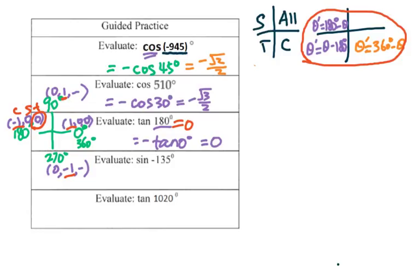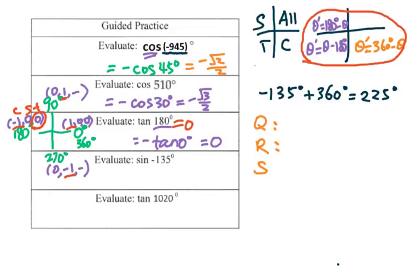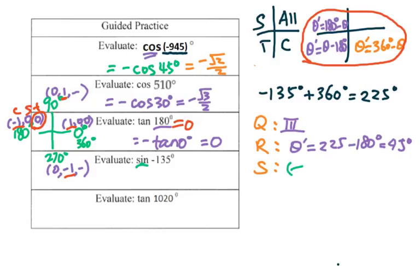For the next question: sine of negative 135 degrees. For negative 135, we add 360 degrees, giving 225 degrees. Then we go to QRS. The quadrant is third quadrant. Reference angle: 225 minus 180 equals 45 degrees. Using "All Students Take Calculus," sine in the third quadrant is negative. So we get negative sine 45 degrees, which equals negative square root of 2 over 2.